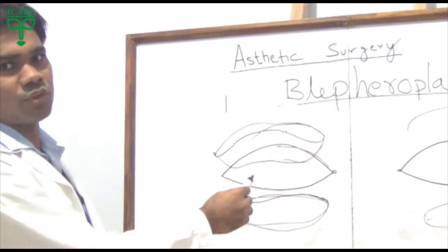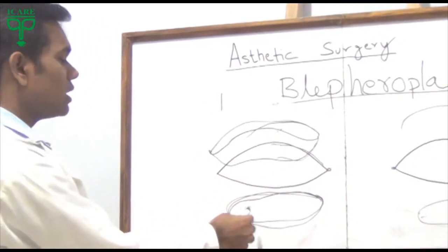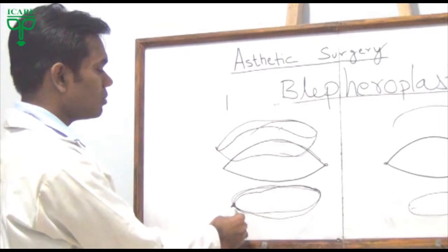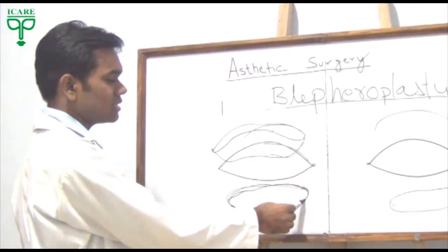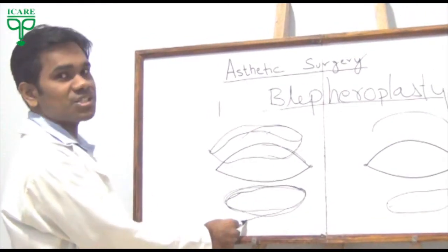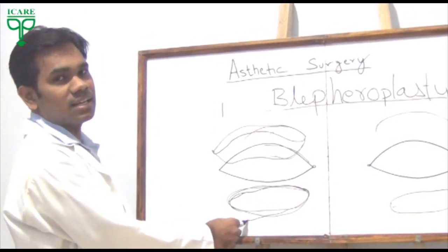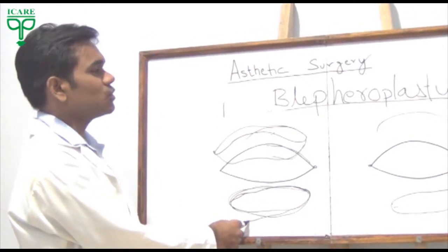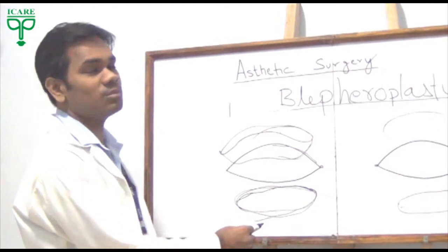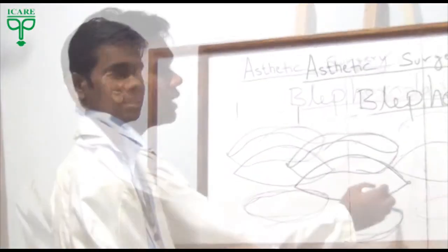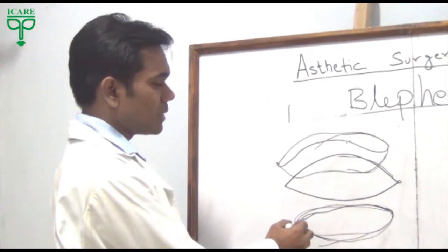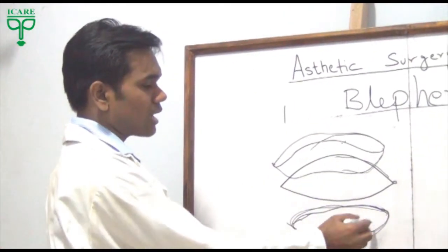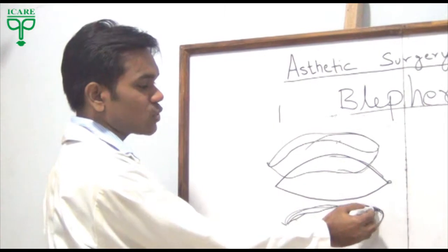Upper blepharoplasty addresses the upper eyelid. When swelling from the bottom is present, that refers to the lower blepharoplasty. The patient who has swelling under the eyelid falls into this category.